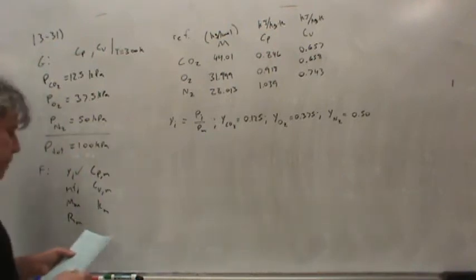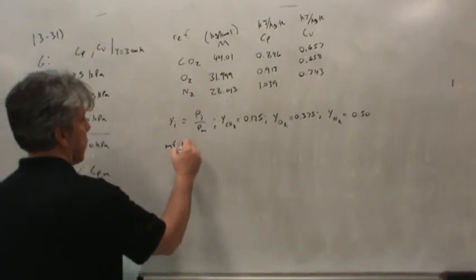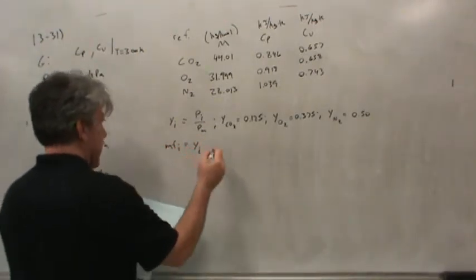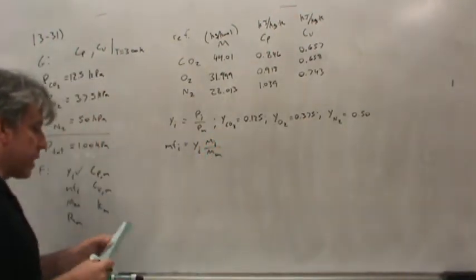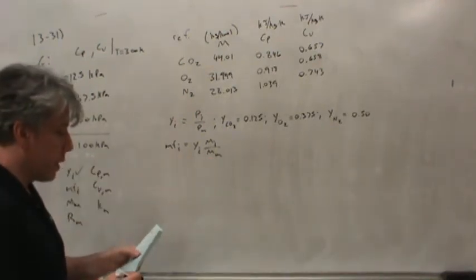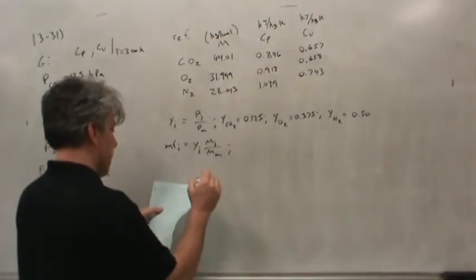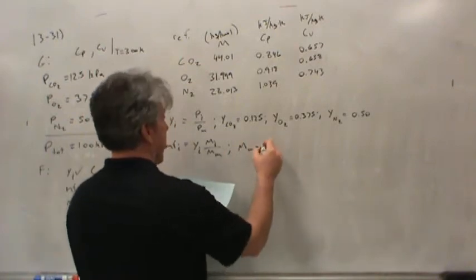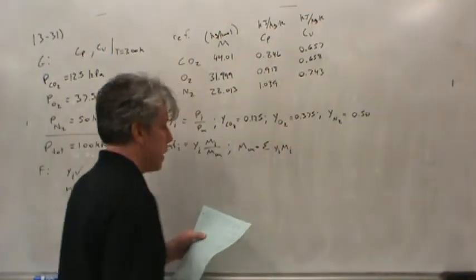Now we'd like to find the mass fractions. To find the mass fraction, it's related to the mole fraction: MF_i = Y_i times the molecular weight of species i divided by the apparent molecular weight of the mixture. So we need the mixture molecular weight first.